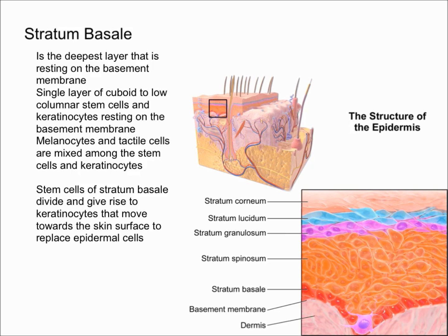Also in this layer there are some melanocytes and tactile cells mixed among the stem cells and keratinocytes. The most important cells in this layer are the stem cells — the stem cells of the stratum basale divide and give rise to keratinocytes, which then move towards the skin surface to replace the epidermal cells.